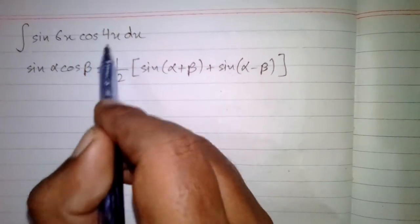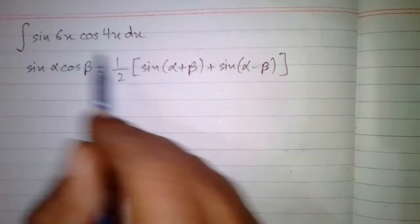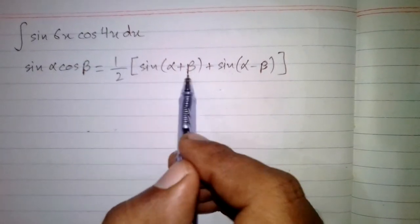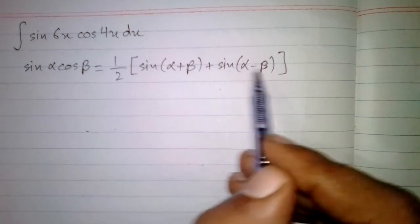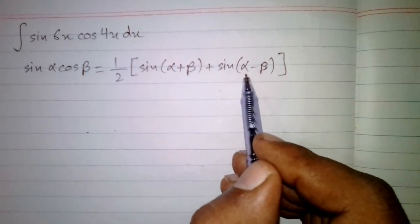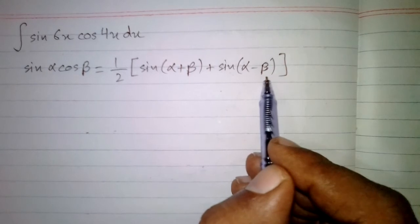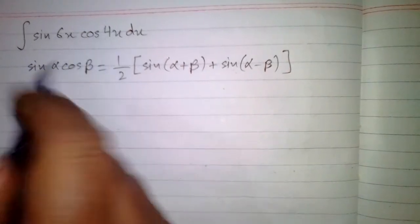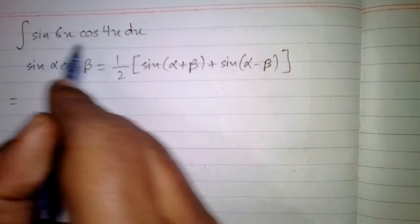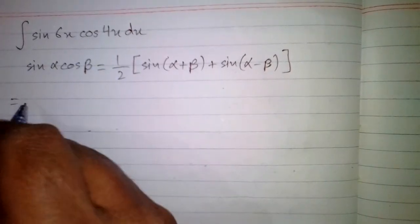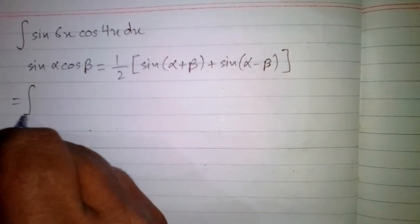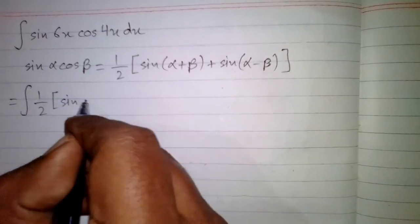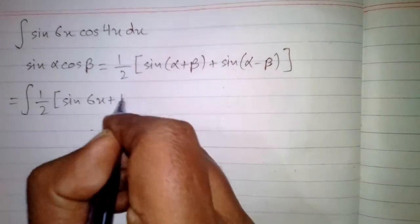We can see that here we have sin 6x in place of alpha and 4x in place of beta. So we put 6x in place of alpha and 4x in place of beta throughout the formula.